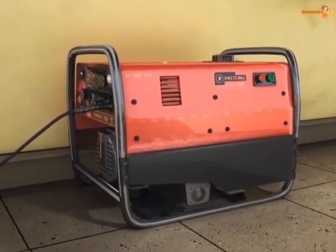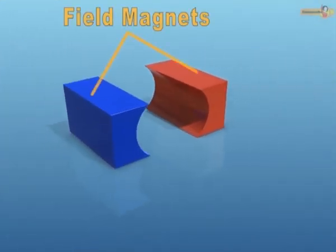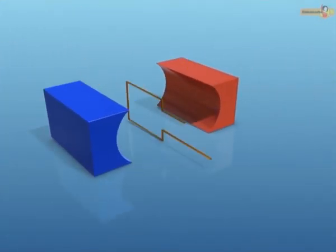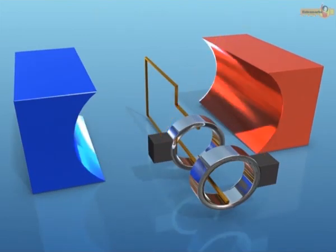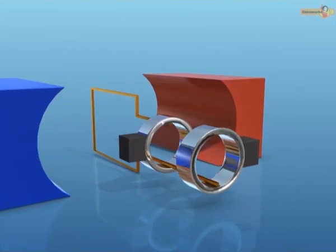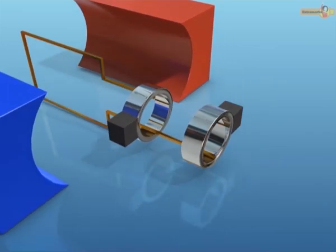Let us now see the construction of an AC generator. An AC generator consists of field magnets, an armature, two slip rings, and two carbon brushes. The poles of field magnets are concave and cylindrical in shape and therefore produce a radial magnetic field. Armature is a soft iron core on which a coil having a large number of turns of copper wire is wrapped. The two ends of armature are attached with two slip rings.